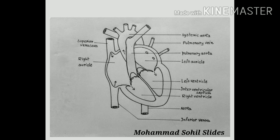The right ventricle receives blood from the right atrium with the help of the tricuspid valve, also known as the atrioventricular valve. The right ventricle is about 4–5 mm thick. Internally, it is separated from the left ventricle by the septum. With the help of the pulmonary artery, blood passes towards the lungs.